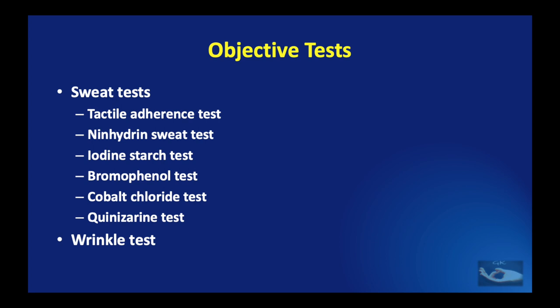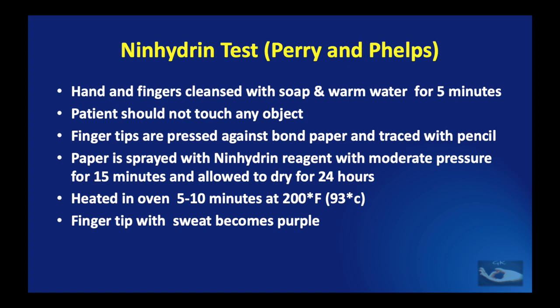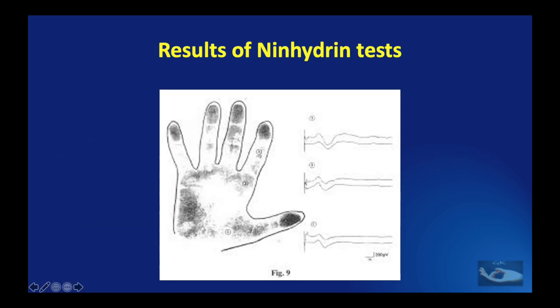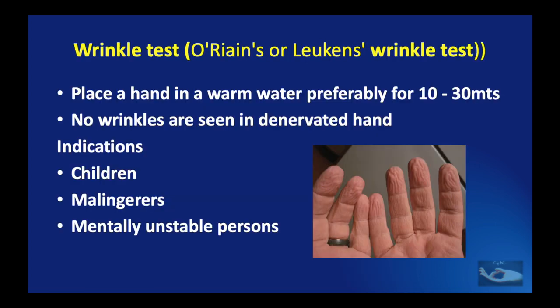Objective tests include the sweat test and the wrinkle test. For the ninhydrin test, the hand is cleansed with soap and warm water for 5 minutes, fingertips are pressed against bond paper, the paper is sprayed with ninhydrin reagent and left for 24 hours, then heated in an oven at 200°F for 5–10 minutes — sweating fingertips produce a purple mark. For the wrinkle test, the hand is placed in warm water for 10–30 minutes; no wrinkling occurs in the denervated hand. These objective tests are especially useful for children, malingerers, and mentally unstable patients.